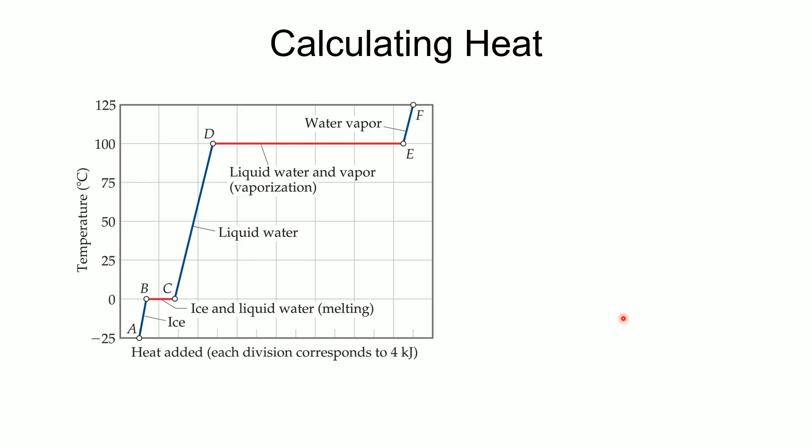We want to calculate how much heat is required to get through each segment — A to B, B to C, C to D, and so on. For the vertical (temperature-increasing) segments, Q equals mass times specific heat times delta T. Q from A to B uses the specific heat of the solid. For the B-to-C phase change segment, there's no temperature change, so Q equals n times delta H of fusion, where n is moles. Q from C to D uses the specific heat of the liquid, with a different delta T.